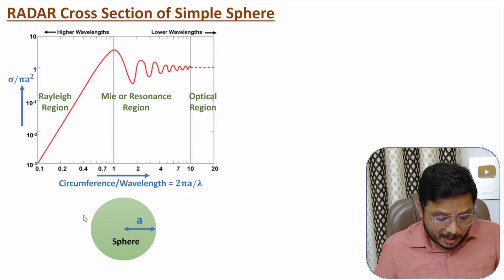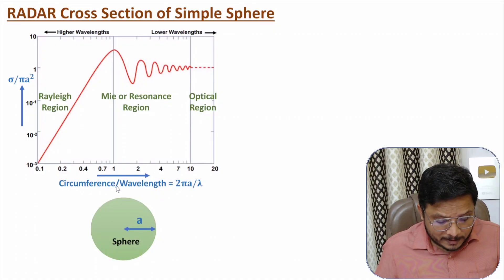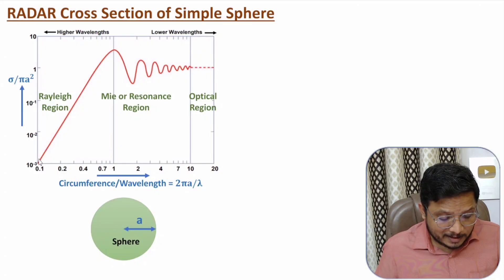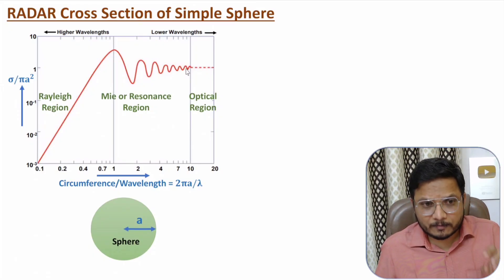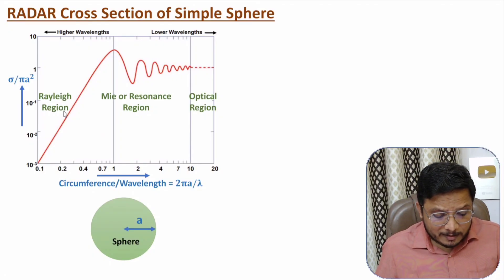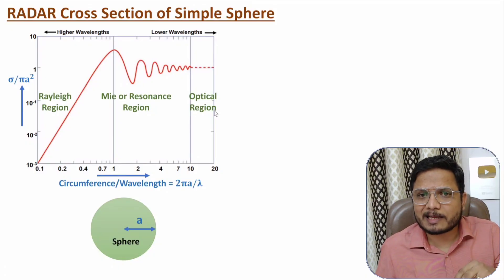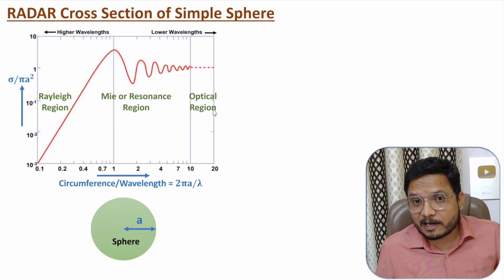We are considering our target as a simple sphere having radius a. On the x-axis we have circumference per wavelength: 2 pi a divided by wavelength. On the y-axis we have cross section of the target divided by pi a square. Observing the characteristic, we have three essential regions: first is the Rayleigh region, second is the Mie or resonance region, and third is the optical region.